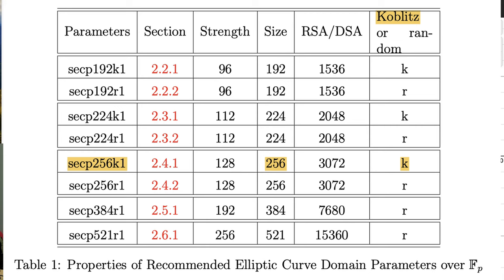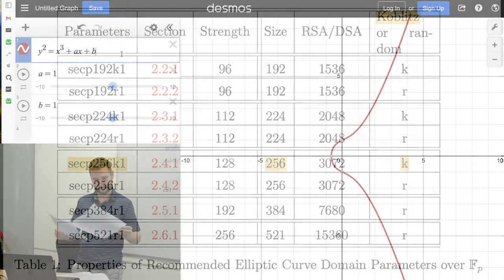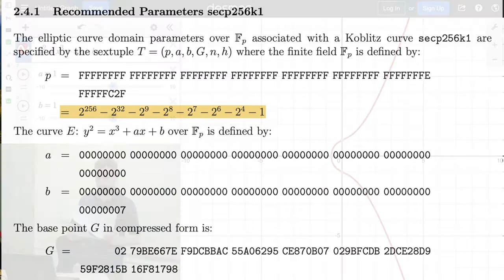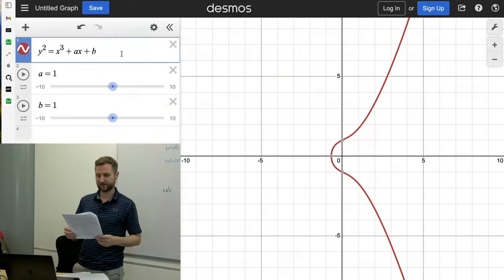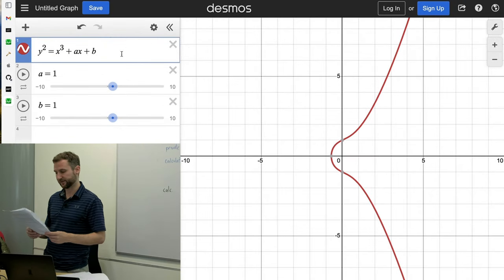The K means it's a Koblitz variety, and that means that it comes with some parameters which are on page nine. So if you're going to open SSL or Wikipedia or you're programming the stuff yourself, you're going to need these parameters, and so we can see some of them here: P, A, B, G, N, and H for just for this specific curve.